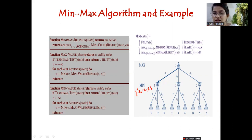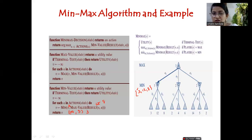The minimizing player picks a value v such that from the result of (s, a) he sees the minimum value. Initially v is infinity. From infinity, the result of max-value gives min(infinity, 3) = 3, so v updates to 3. Next, the result of (s, a) is 12; min(3, 12) is still 3, so v remains 3. Next, the result of (s, a) is 8; min(3, 8) is 3, so v remains 3. That becomes the value of node B.